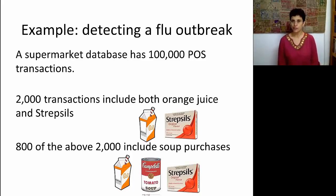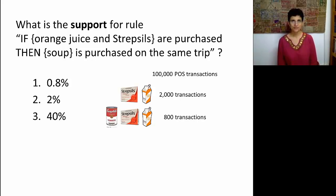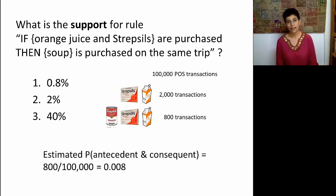Let's see what we can say about the support and confidence of these rules. The support doesn't really care what's in the if versus the then — it looks at both the antecedent and consequent together. Looking at baskets that have all three items — orange juice, strep cells, and soup — we have 800, and we divide that by the total number of baskets, 100,000. That gives us a support of 0.008, or 0.8%.